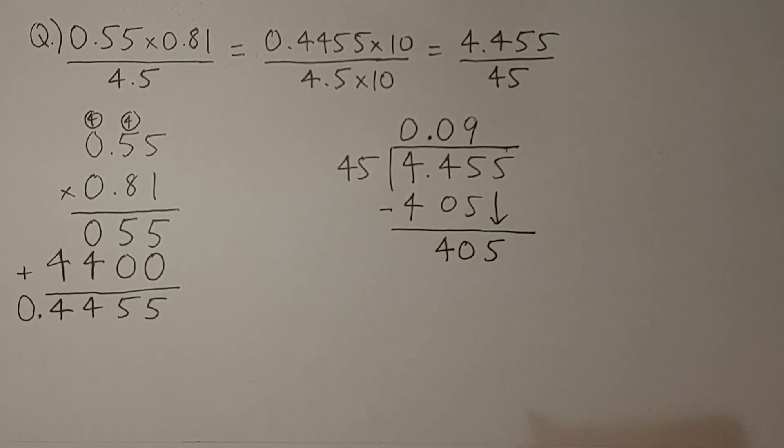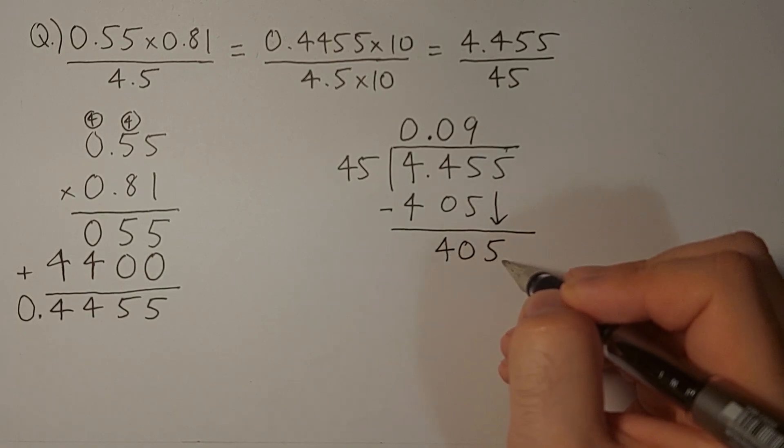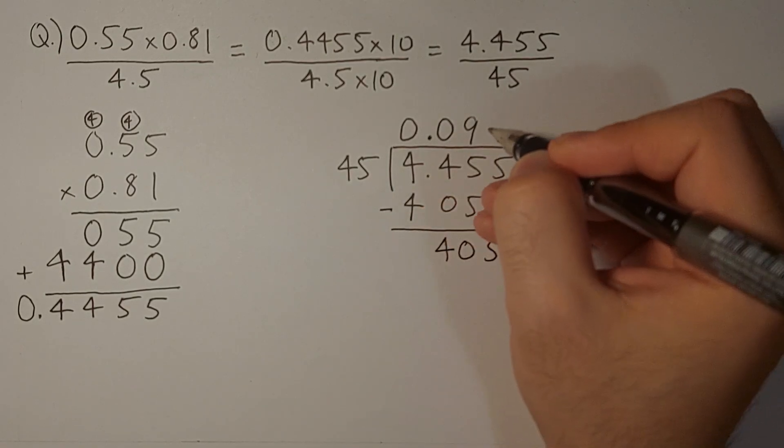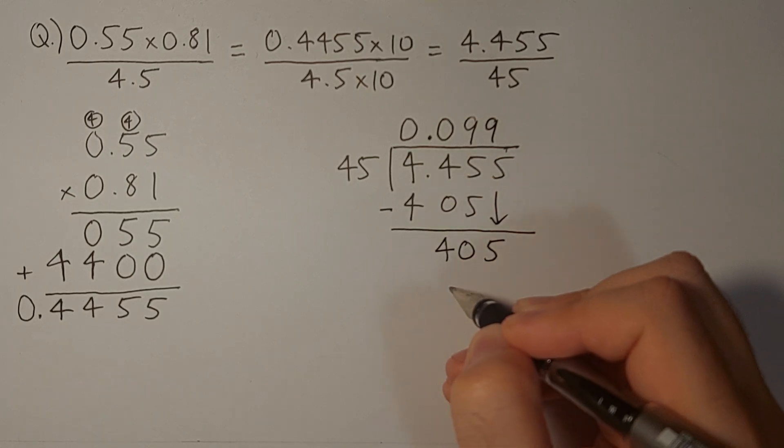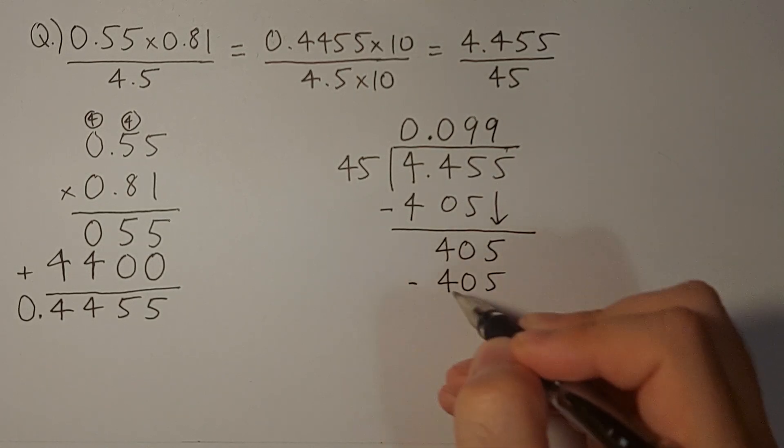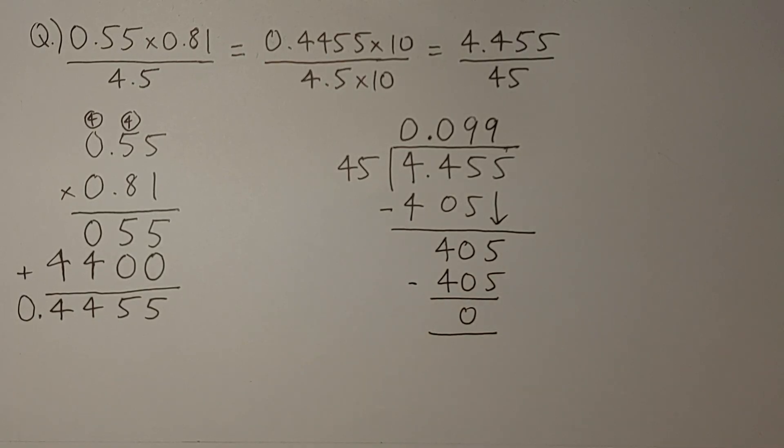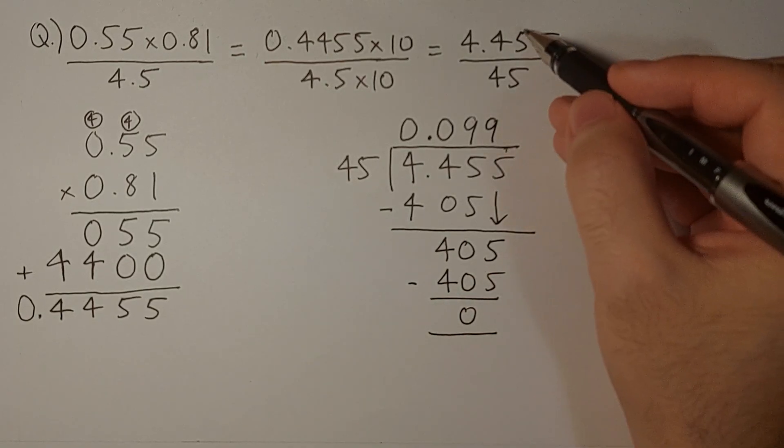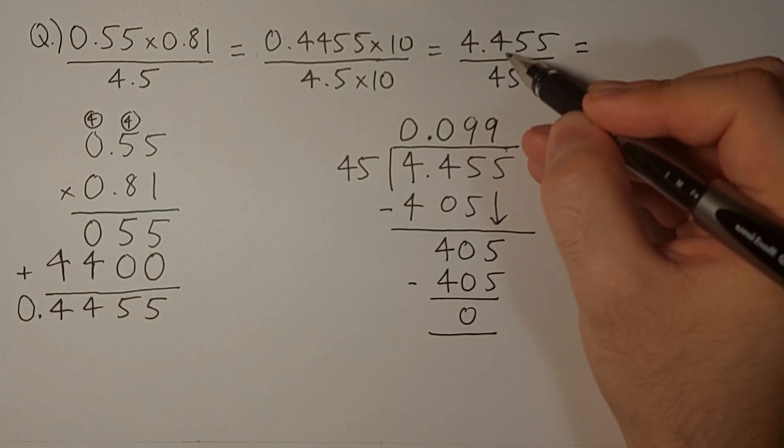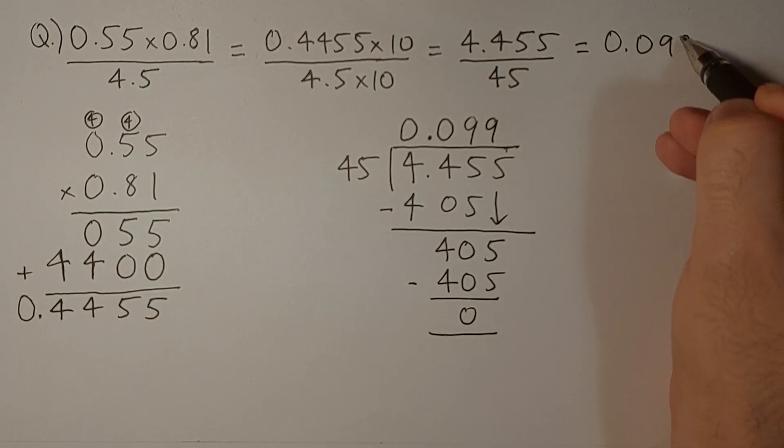We bring down the 5 and we have 405 again. Again, we multiply 45 by 9. We get 405. This gives us 0. So 4.455 divided by 45 is 0.099.